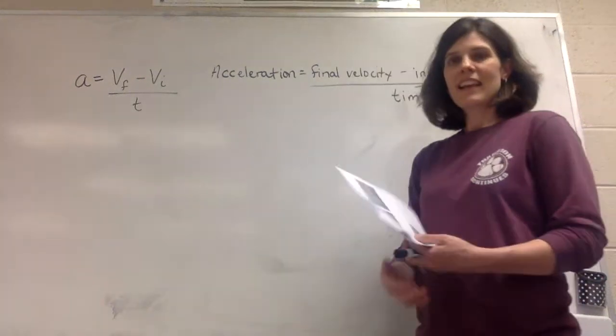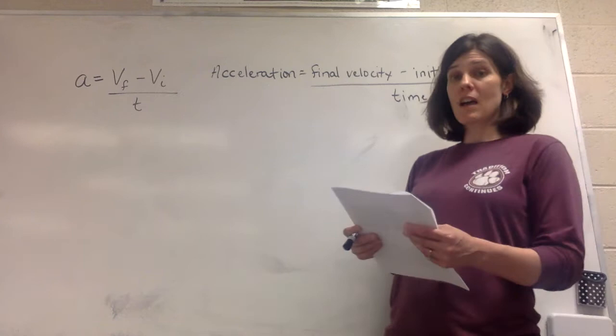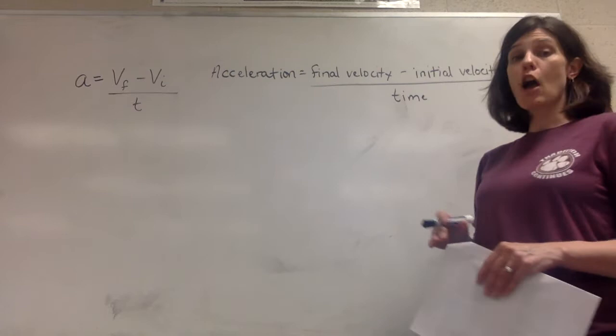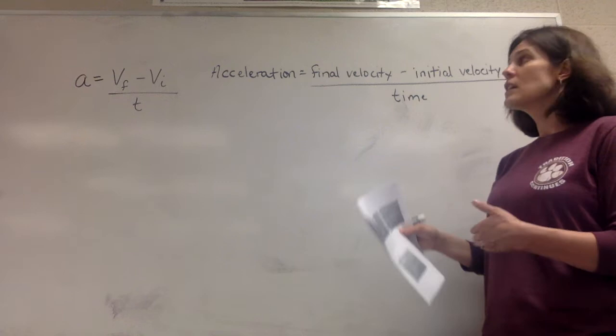Hello again. Today I'm going to show you how to use the acceleration equation to calculate an object's acceleration. Remember from Monday we learned that acceleration is the change in an object's velocity over time. So we're going to look at the difference in the change in velocity divided by time, and remember since velocity includes magnitude — a number — and direction, acceleration is also going to have a number and direction associated with it.